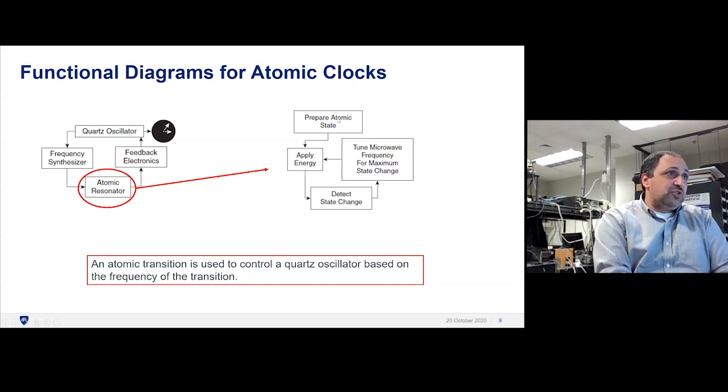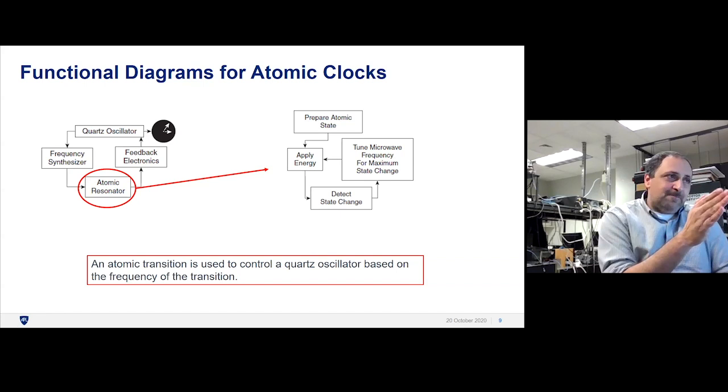What do you do in the atomic resonator? First you prepare the atomic state. You apply energy in the form of microwave energy at say a gigahertz or 10-ish gigahertz, then you detect a change in the state of the atoms. You use that change to tune the frequency you're applying. You get it to a point of stability, and that's when it's all tuned up and you're properly measuring time.